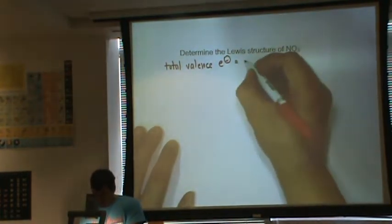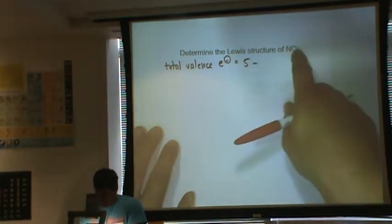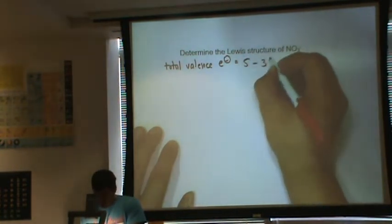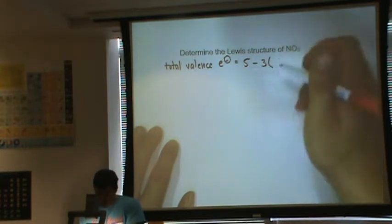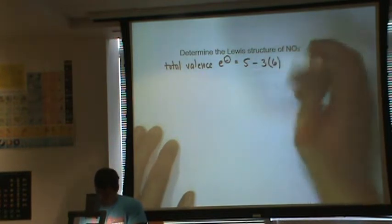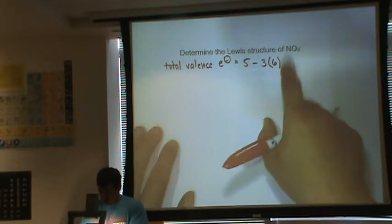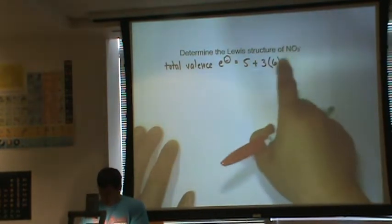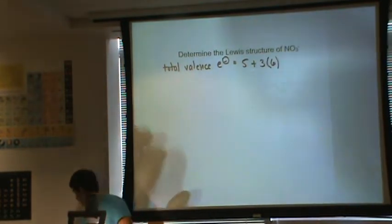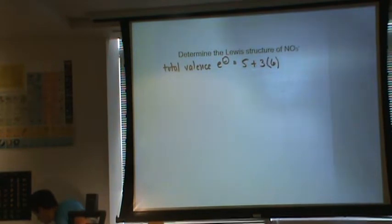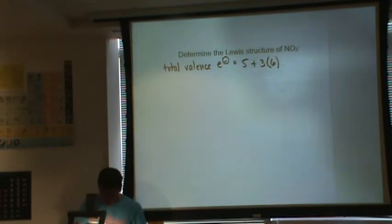Nitrogen has five electrons. We have three oxygen atoms, three times six, because each oxygen atom has six valence electrons. But this time we're not, oh, this should be a plus, sorry. I got a second guess myself. I'm wrong.